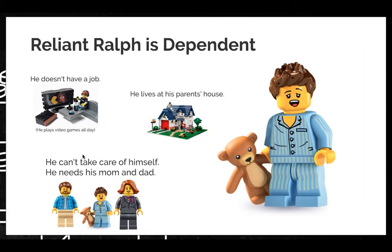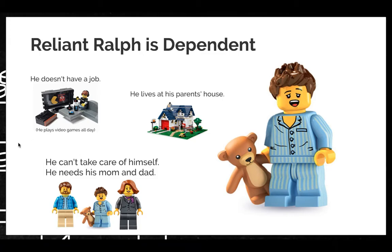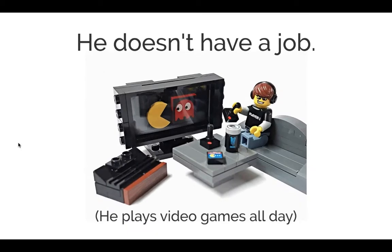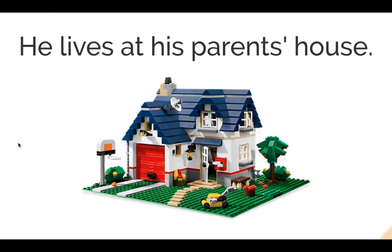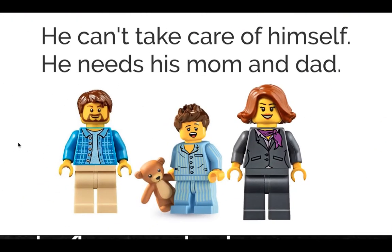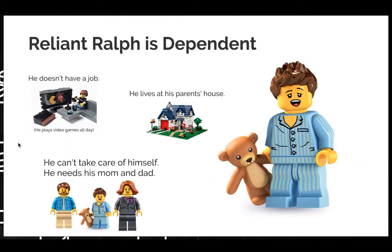Here's Reliant Ralph. He helps me remember what the word dependent means. Reliant Ralph doesn't have a job — he just plays video games all day. Reliant Ralph lives at his parents' house. He doesn't take care of himself; he needs his mom and dad. Just like any child or kid, they are dependent. That means they need their mom or dad to take care of them. So the word dependent means I need something else or someone else.